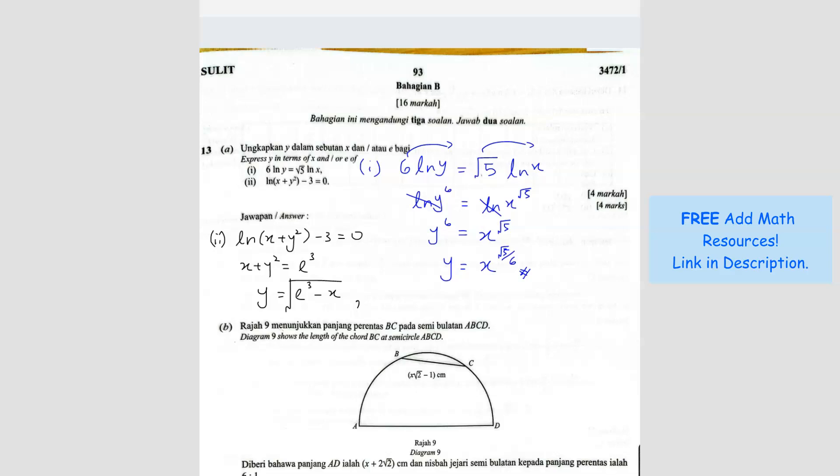Now don't forget to write down the domain. So we know that when there is square root, e cube minus x must be more than or equal to 0. So negative x is more than or equal to negative e power 3. So I divide by negative 1. I get x less than or equal to e power 3. Don't forget the sign must change. So this is the domain.